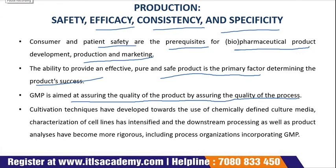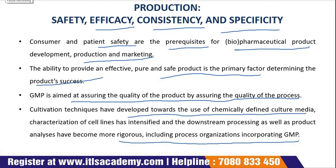Biopharmaceutical products manufactured by processes using mammalian cell cultures have gained increasing importance in recent years. Strong awareness of the considerations for safety and quality of such products has also emerged and led to improvements in cultivation and production technologies, validation procedures and process organization. Cultivation techniques have been developed towards the use of chemically defined culture media. Characterization of cell lines has intensified, and downstream processes as well as product analysis have become more rigorous, including process organization and compliance with GMP. The development of validated manufacturing processes is a prerequisite for pharmaceutical application of newer biotechnological products such as DNA plasmid-based genes in vaccines and gene therapy.